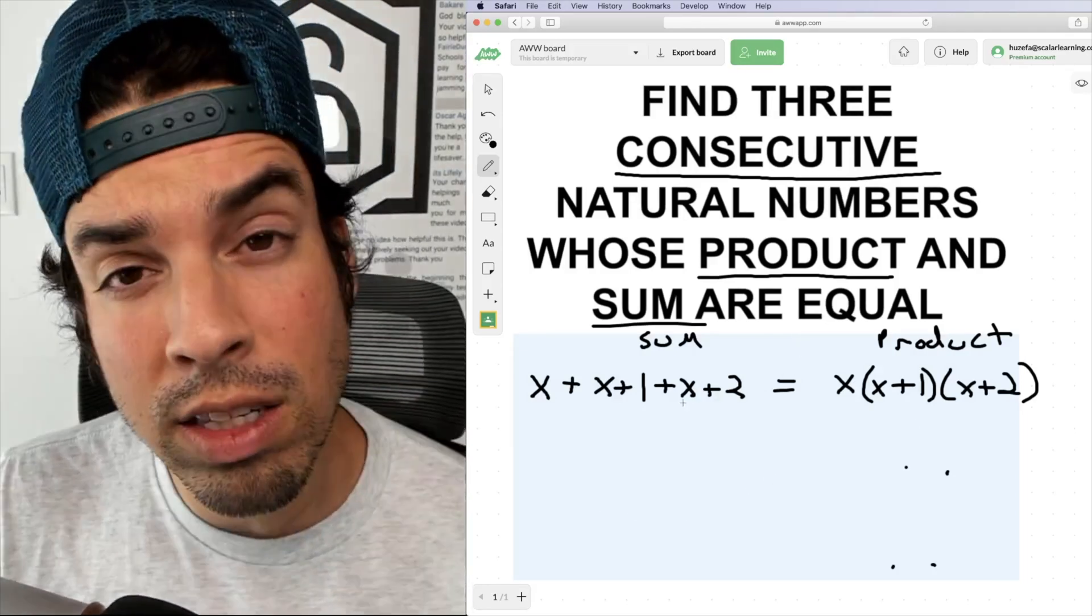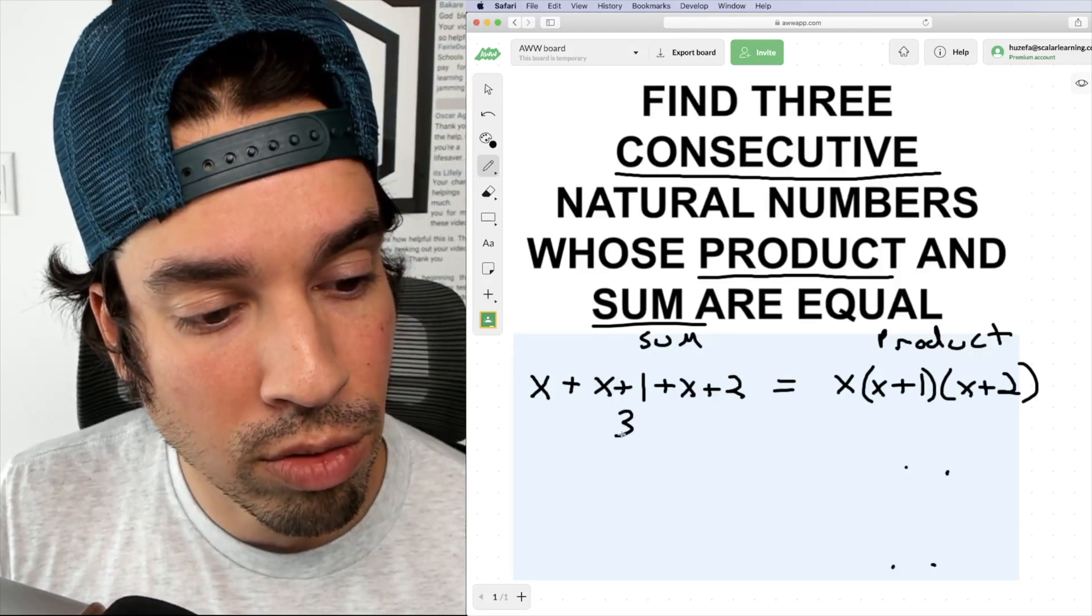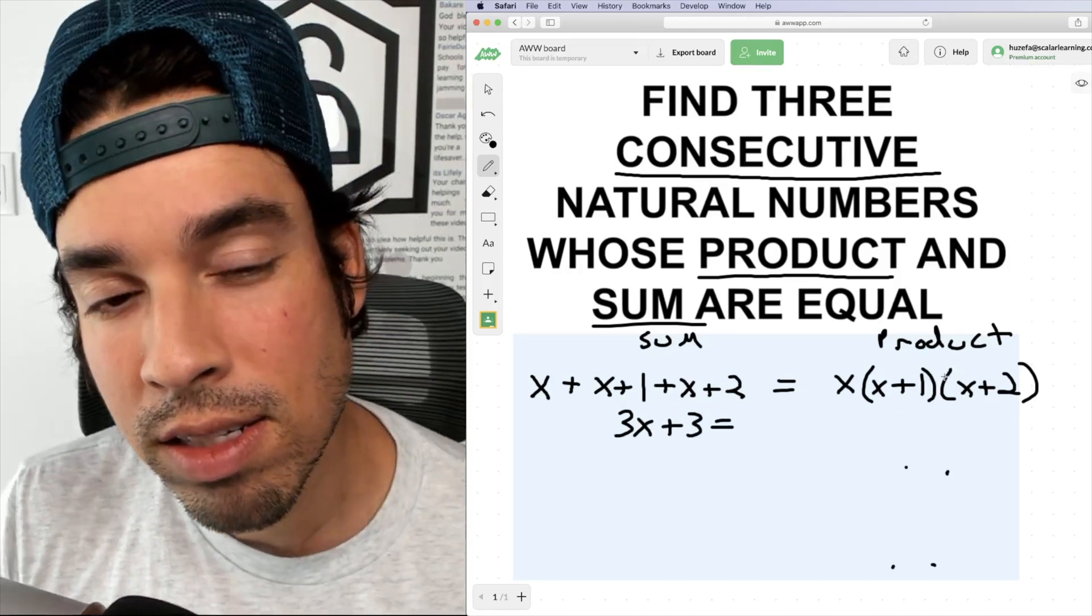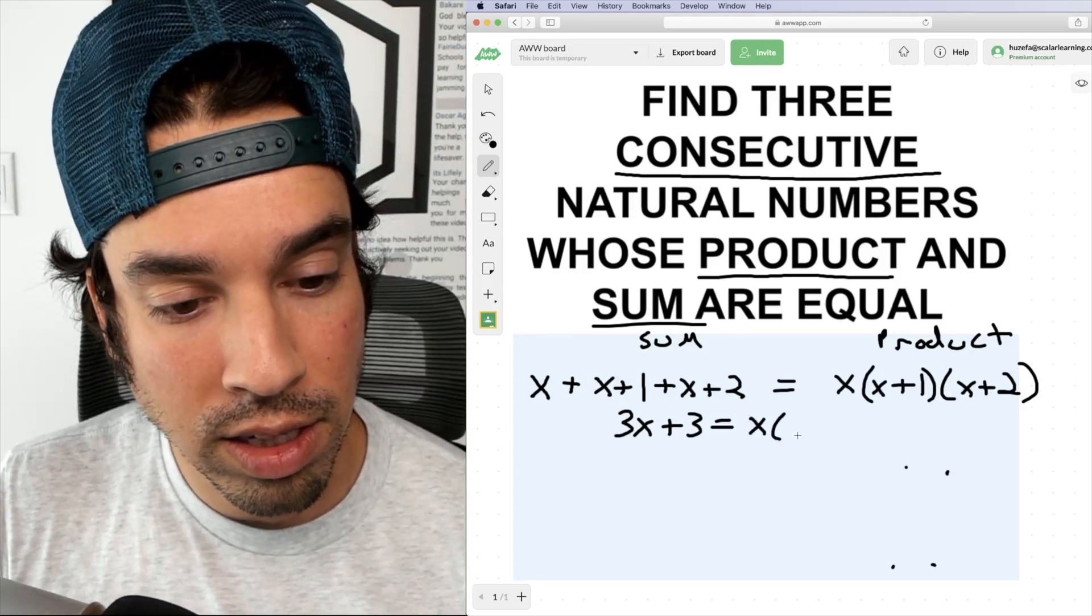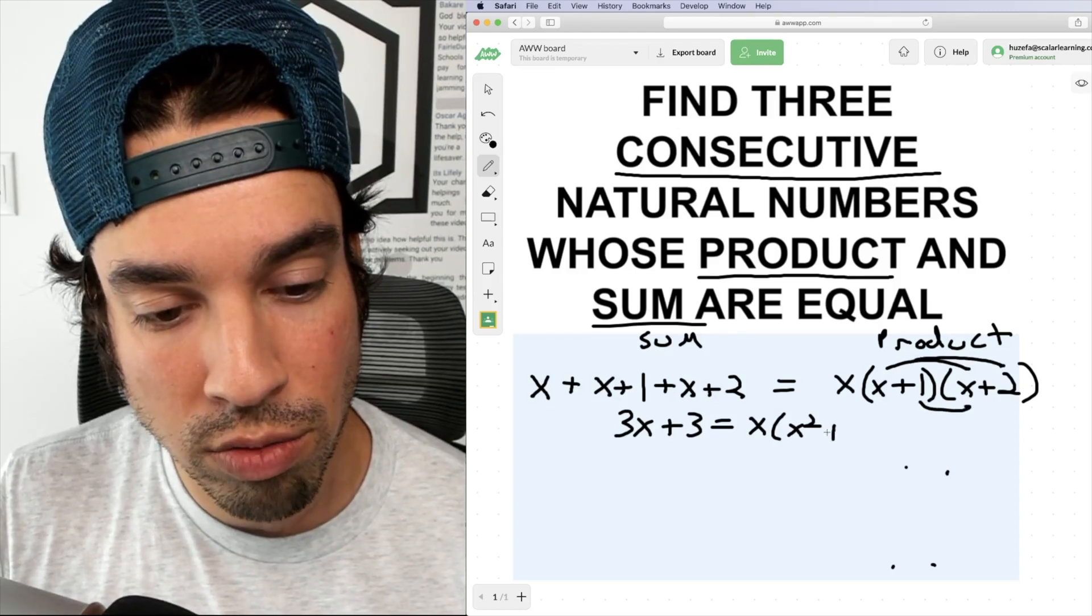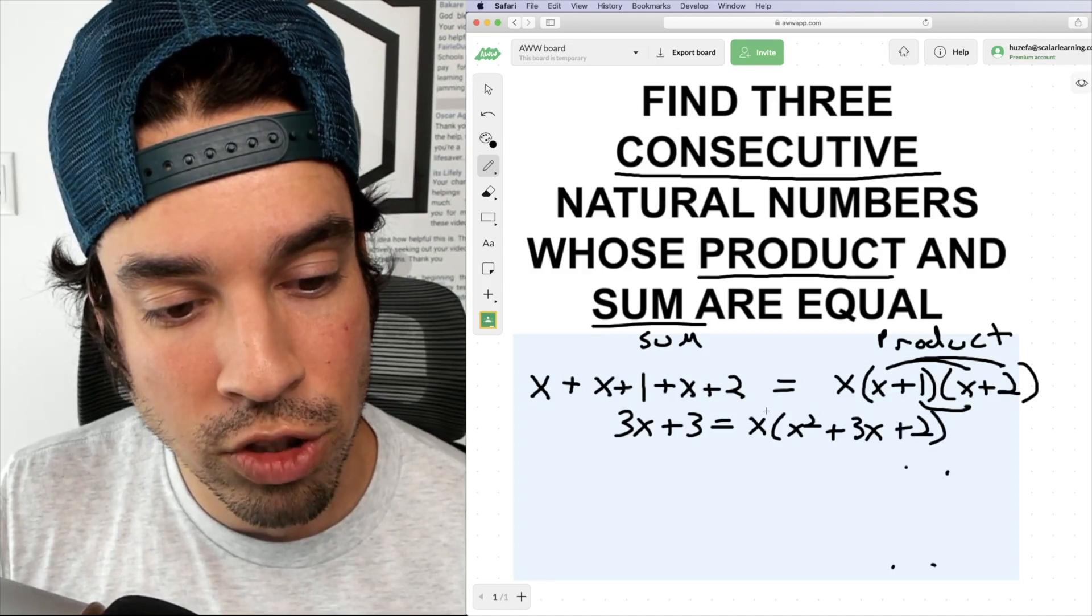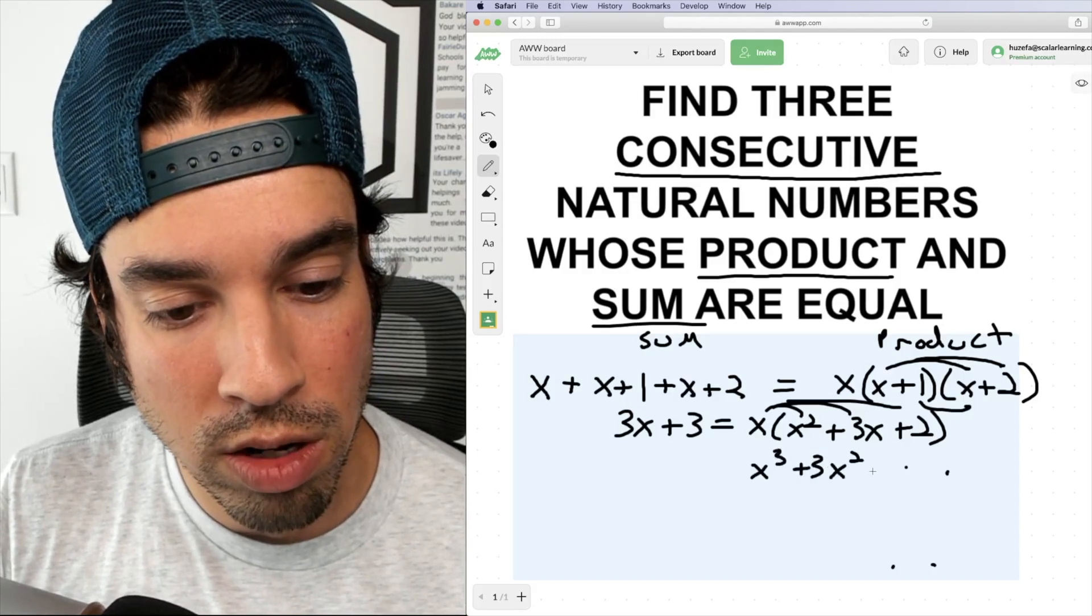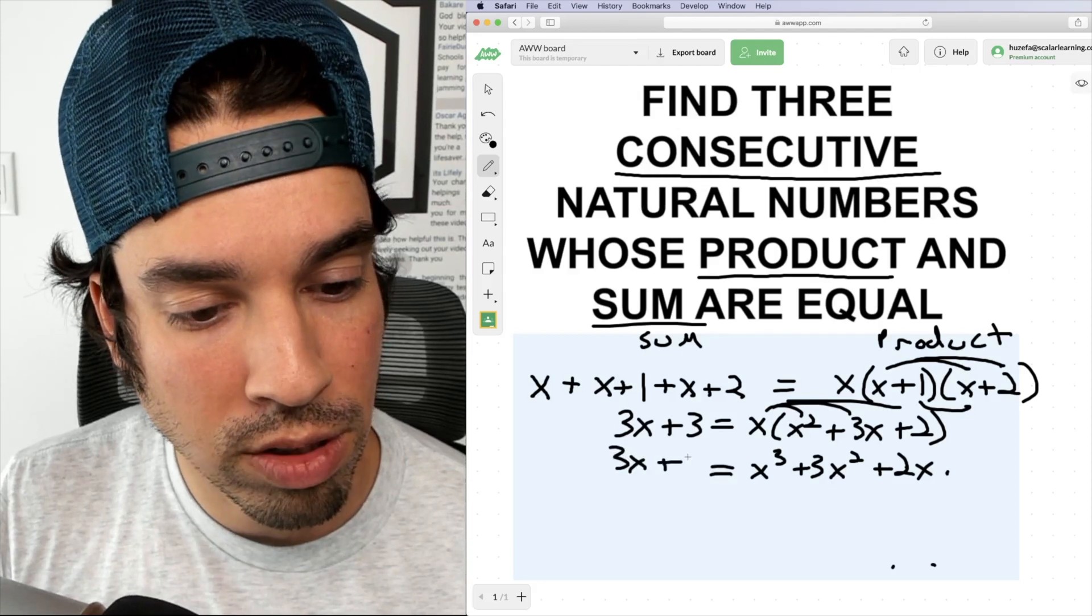All right, now let's use our algebra to see if we can figure this out. So we add the x's up on the left side and we get three x, one plus two equals three. And then what about on the right side? This is a little trickier. I'm gonna foil these two inside binomials first. And that's gonna give me x squared, right? Plus two x plus x, which is three x. And then plus one times two, which is two. And then I'm gonna finish distributing that final x. So now I've got x cubed plus three x squared plus two x. Okay, equals three x plus three.